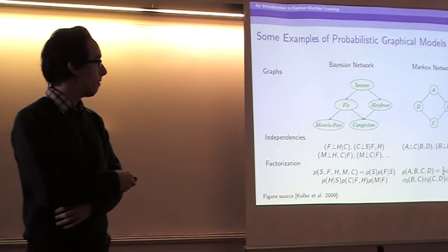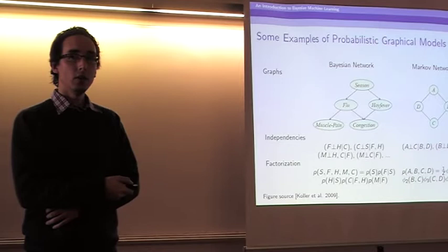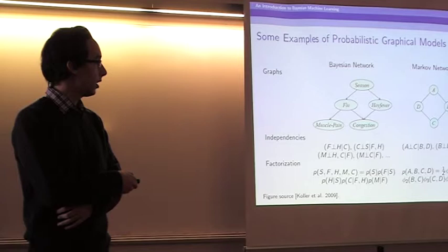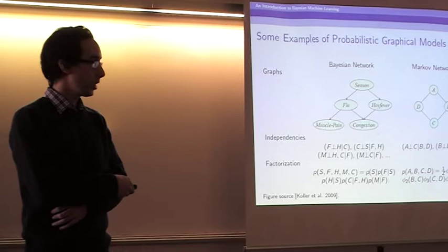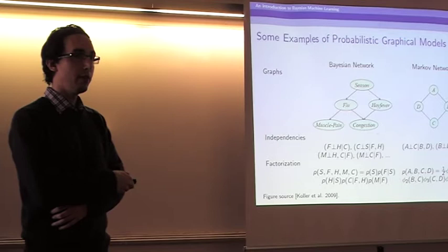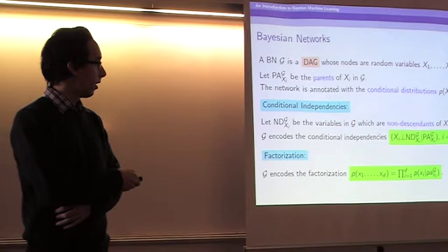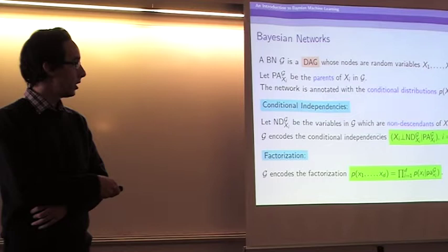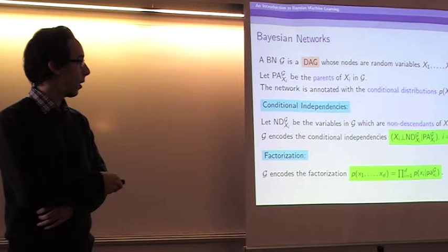For each node — for example, 'congestion' — if we condition on the value of its parents, that node will be conditionally independent of all its non-descendants: those nodes that cannot be reached by going down in the network from that node. For example, 'muscle pain' is a non-descendant of 'congestion', so if we freeze 'flu' and 'fever', congestion is conditionally independent of muscle pain. So to summarize, Bayesian networks are graphs where each node has some parents, we have conditional distributions for each node given its parents, the network encodes a factorization of the joint distribution as a product of those factors, and we have a set of conditional independencies.